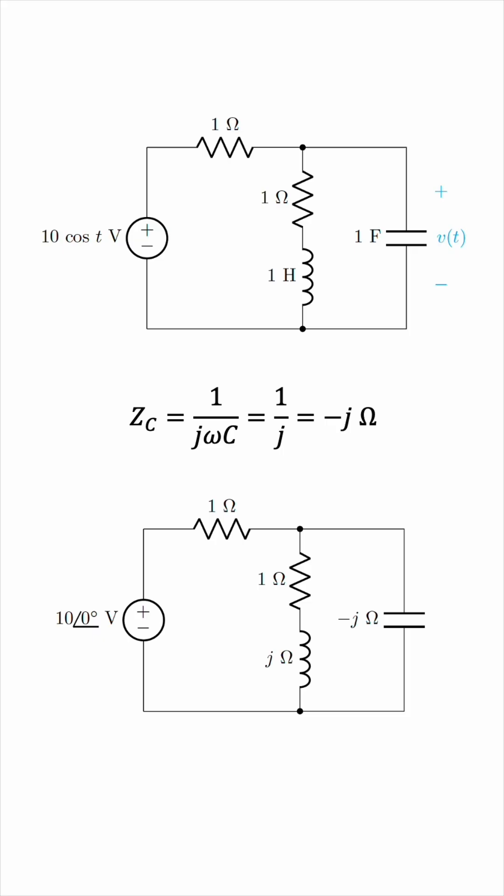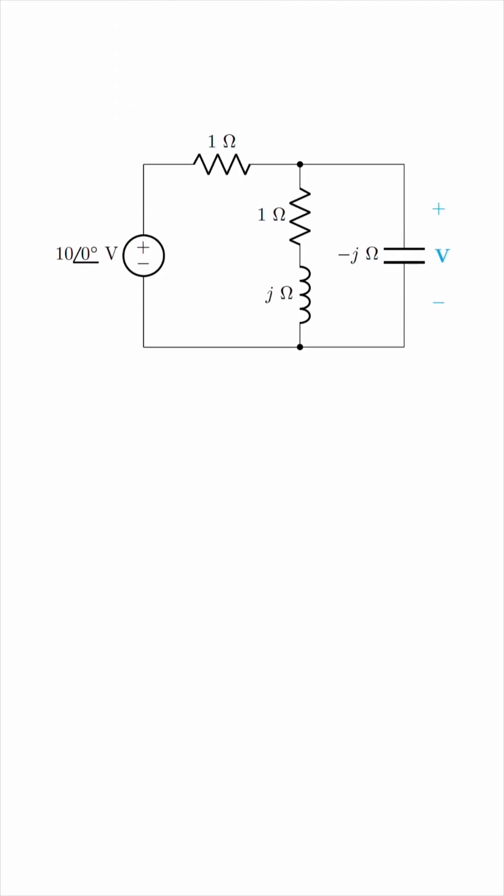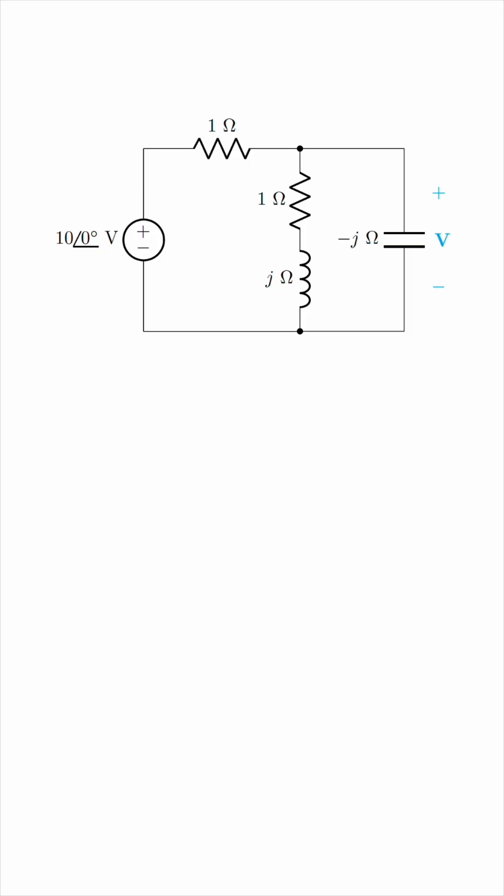Finally, we'll transform the labeled voltage V of T into the frequency domain by making it a capital boldface V, meaning the phasor quantity V. And now, we'll do regular circuit analysis on this frequency domain circuit. How do we find this voltage V?